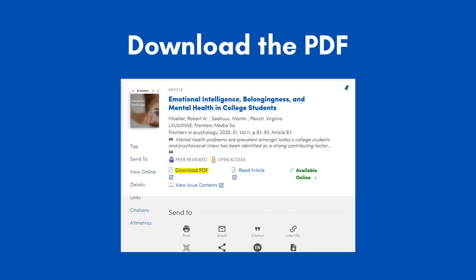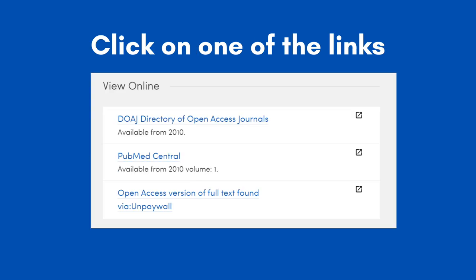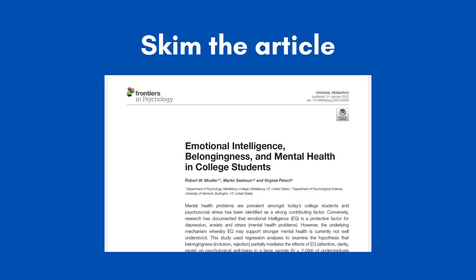When we click on the title, it will open up the record or profile of the article. From here, we can access it by clicking where it says Download PDF. If for some reason that link doesn't work, we can scroll down and click on one of the links under View Online. From here, we will skim the article and see if it's worth using in our research.